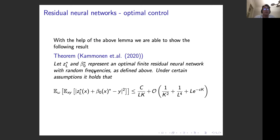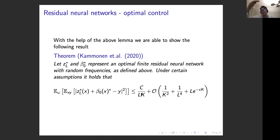After some fairly technical work, we arrive at the following theorem: if we have an optimal residual network with random frequencies as defined above, then under certain technical assumptions, the generalization error can be bounded as E_ω[error] ≤ C/(L·K) + lower order terms, where L is the number of layers and K is the number of nodes in each layer.